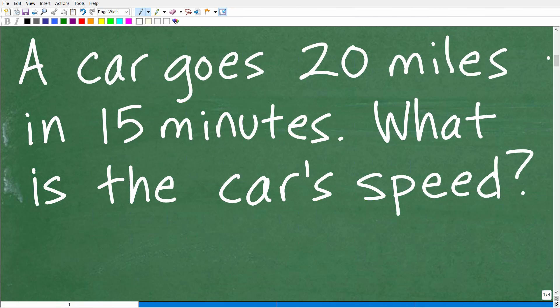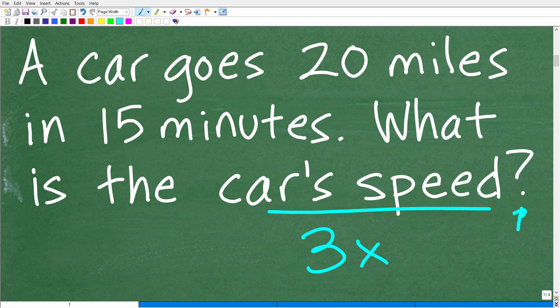And in any math word problem, you want to get in the habit of reading the problem at least three times. Just don't read the problem once and start doing stuff. That is a surefire recipe for disaster. Read the problem once real quick, get a sense of what's going on. Read it again to get more details. And then the third time, at a minimum, make sure you understand what the question is. Just go to the question mark and back up from there. So what is the car's speed? I'm looking for how fast this car is going, and I'm given some information about how fast or how much it traveled over a certain period of time.